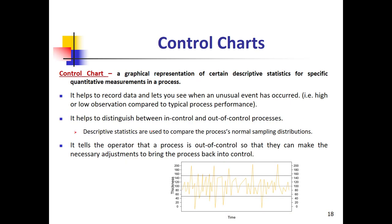Control charts are the graphical representation of a certain parameter — a descriptive parameter. For example, if you are producing a chemical, you can measure the pH, concentration, the amount of sodium, the amount of oxygen. You can measure different parameters and then plot each parameter versus time. You have your production line with a sampling point.